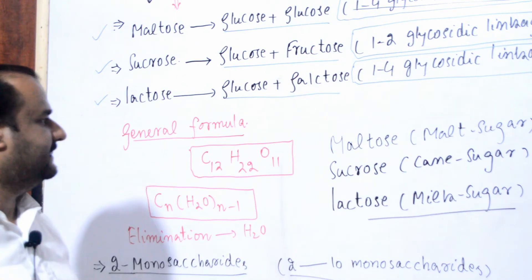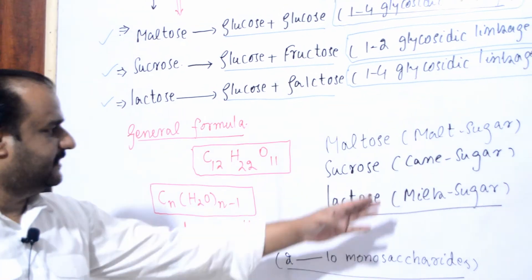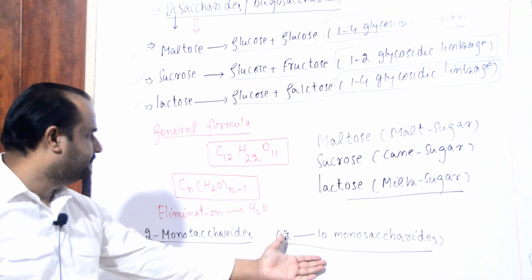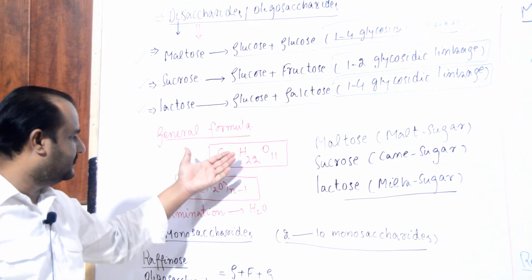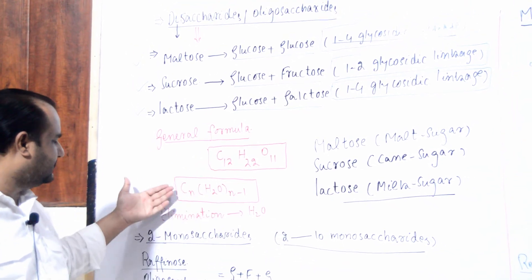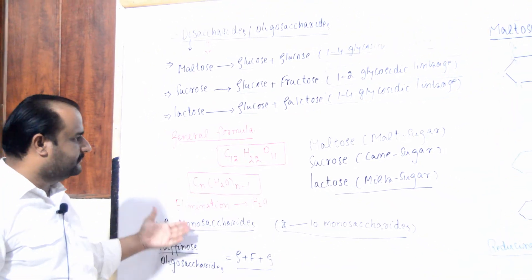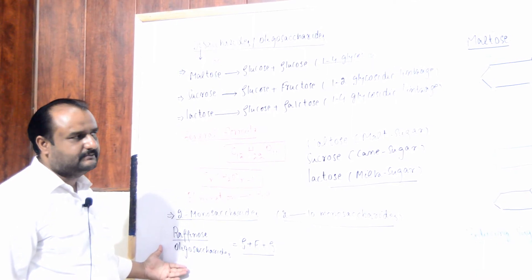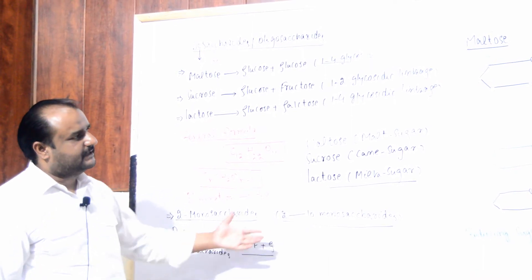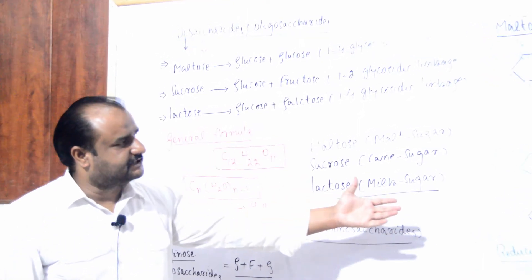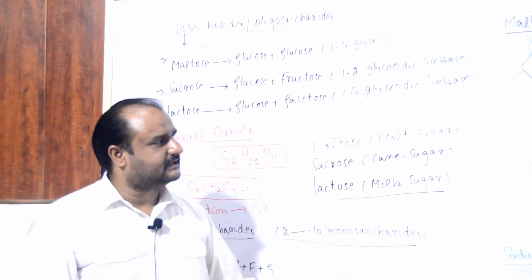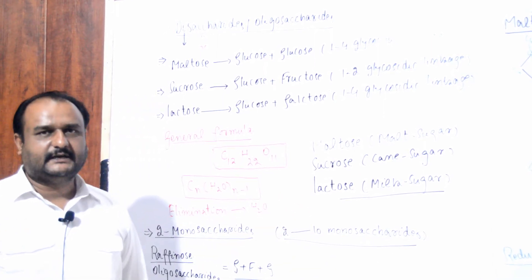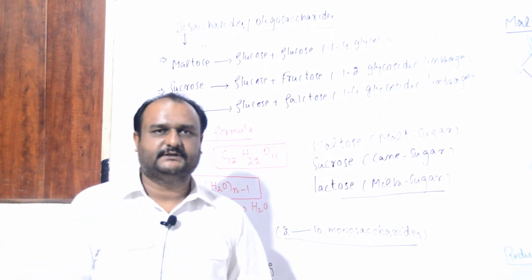This was about the disaccharide jo maine aapko padhaya - teen examples di. Pehli example mein maltose, phir sucrose, phir lactose. In examples mein maine aapko reducing sugar aur non-reducing sugar ke baare mein bataya. Maltose aur lactose reducing sugars hain. Sucrose less reactive hai. Phir oligosaccharide mein raffinose ki example di. Thank you very much.